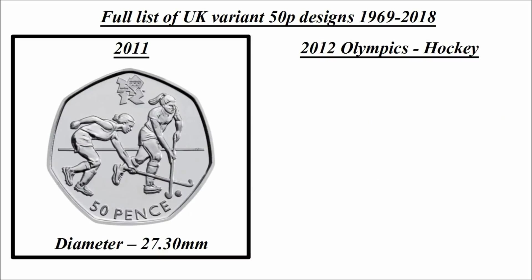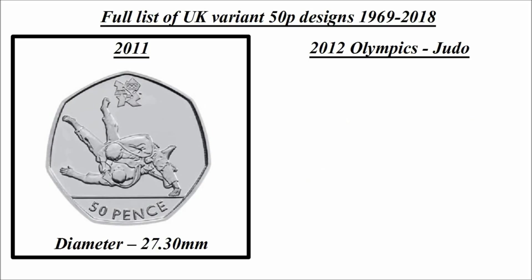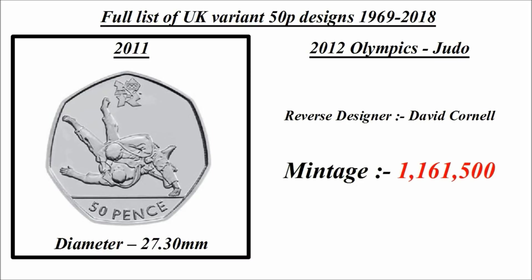Olympics hockey: reverse designer Robert Evans, mintage 1,773,500. Olympics judo: reverse designer David Cornell, mintage 1,161,500.